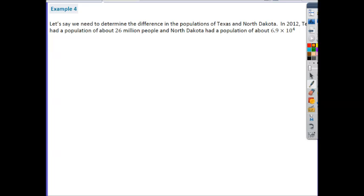Okay, let's take a look at example 4. Let's say we need to determine the difference in the populations of Texas and North Dakota. In 2012, Texas had a population of about 26 million people, and North Dakota had a population of about 6.9 times 10 to the 4th. So the first thing you need to decide is, what operation are they actually asking me to do? So if we read through it again, you'll realize they're saying, what is the difference? And we should know the difference is asking us to subtract the two numbers. So that's the first thing. Now the second thing is, both of my numbers need to be in the same format. So they either need to be in standard notation, like the 26 million, or they both need to be in scientific notation, like the population of North Dakota. Because we're trying to learn about scientific notation here, let's go ahead and turn our 26 million people from Texas into scientific notation.